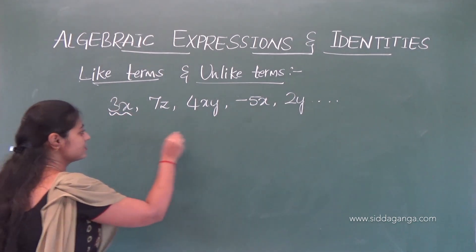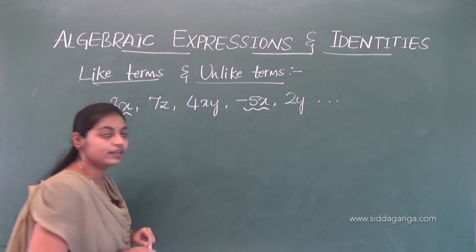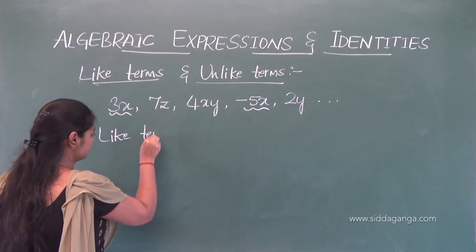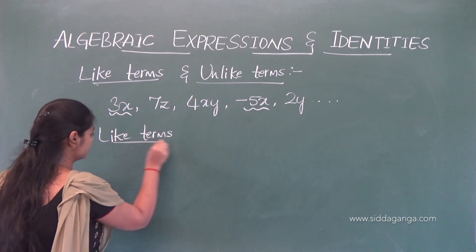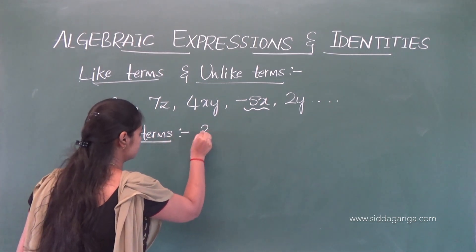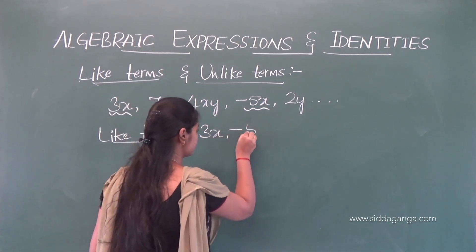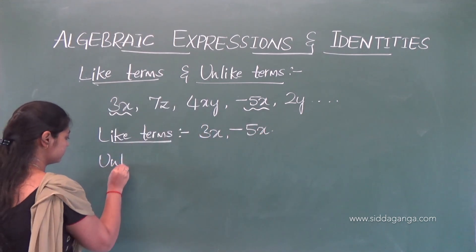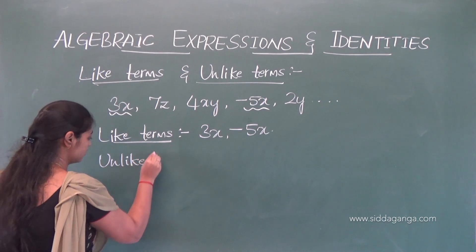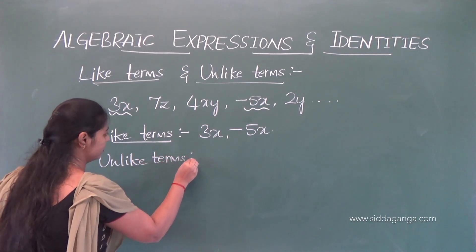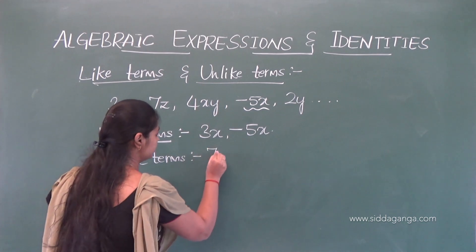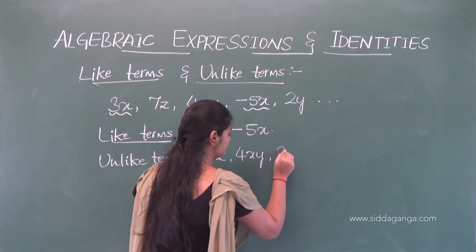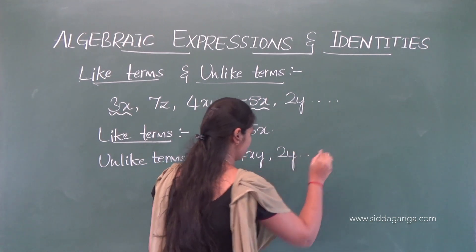For example, 3x and minus 5x are like terms — the variables are similar. Unlike terms would be expressions like 7z, 4xy, 2y and so on, where the variables are different.